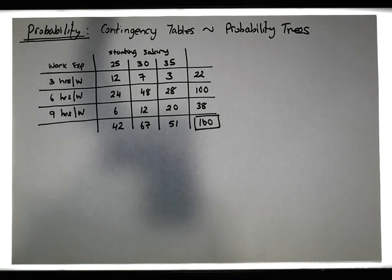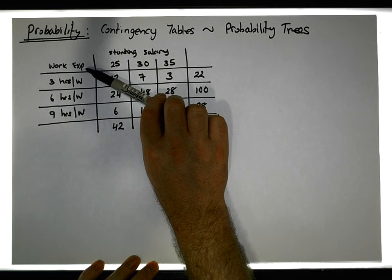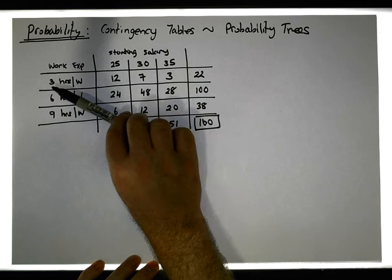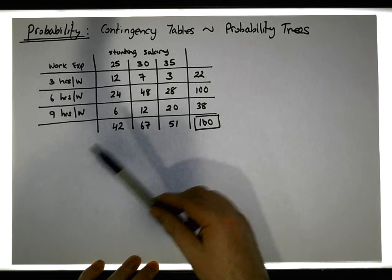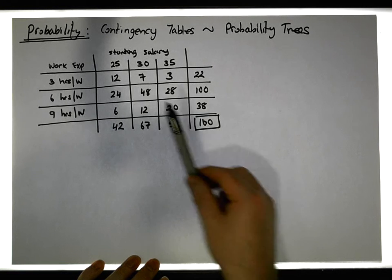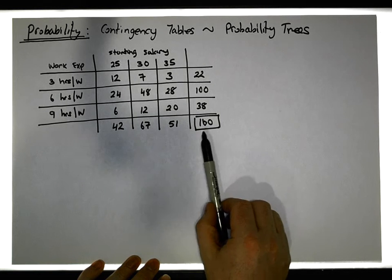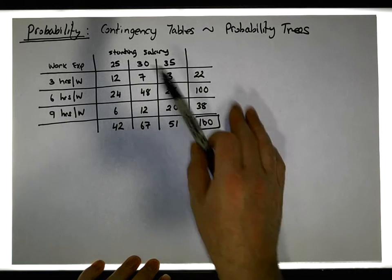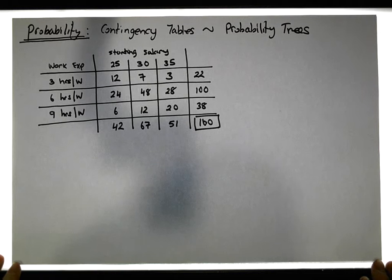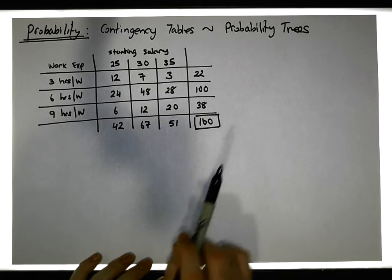The contingency table is made up of two categorical variables. The two variables in this case are work experience — the amount of work experience students undertake per week, either three, six, or nine hours per week — and also their starting salary, whether it was 25,000, 35,000, or 40,000 euros. This particular example is taken from a past exam paper at National College of Ireland written last year by a colleague of mine.